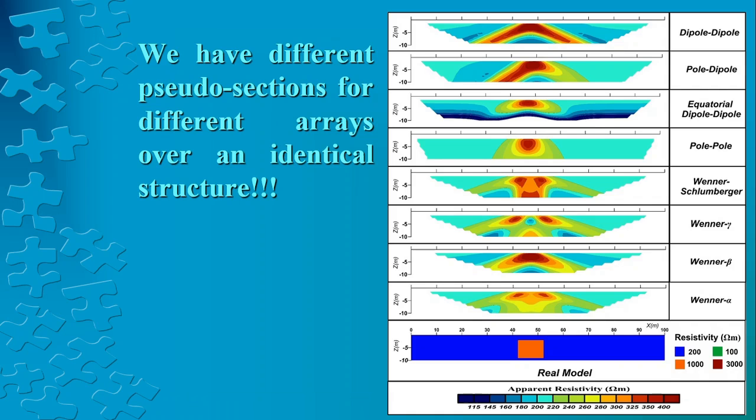Why? Because even for a similar structure we will have different Pseudo-sections for different arrays. This is what I have calculated myself and I'm going to show you how it is done in next videos. You will see, and it is also a model that is present in the Dr. Luke course materials from www.geotomosoft.com in the download section.